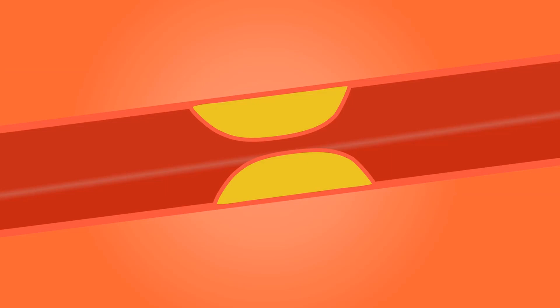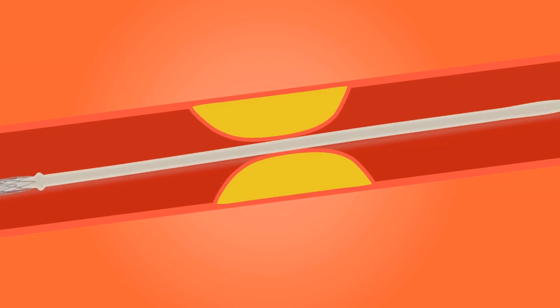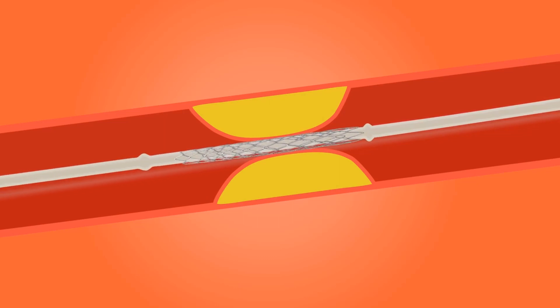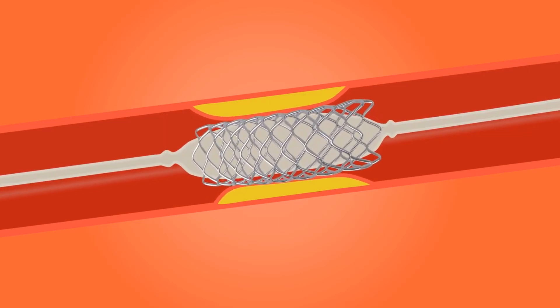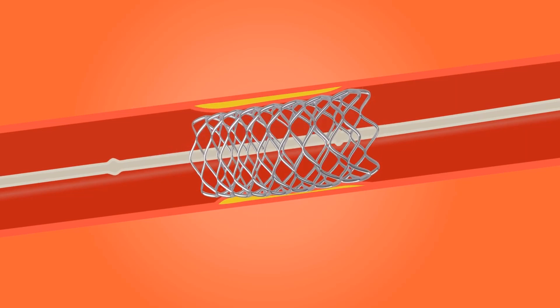Using a similar procedure, if the balloon is inserted with a stent that is made of stainless steel mesh, as the balloon is inflated, the stent expands and remains in place to keep the artery lumen open and allow normal blood flow. The balloon is then deflated and removed.